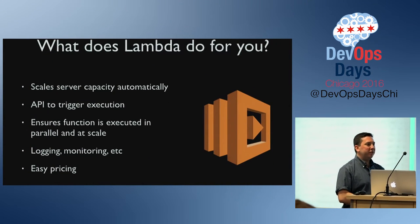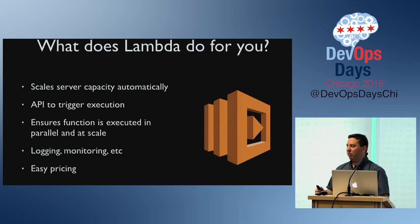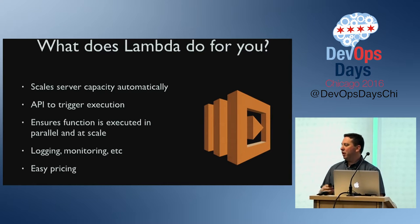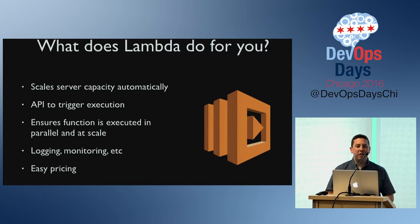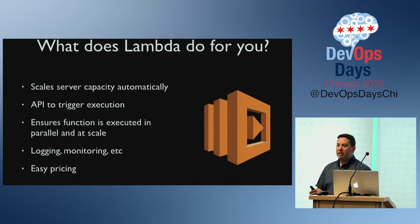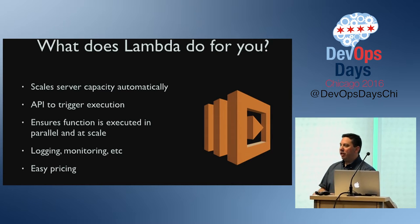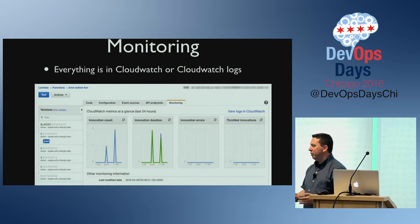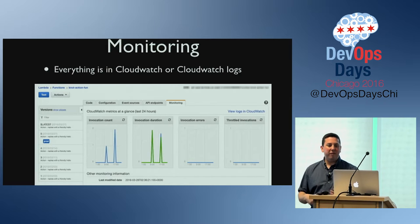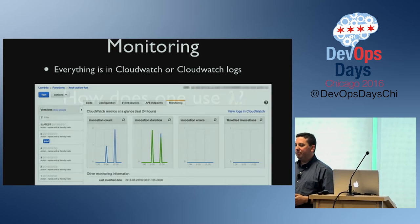So what does Lambda do for you? Lambda is sort of the canonical serverless environment. They manage server capacity, make sure functions are executed, and handle some logging and monitoring. Their monitoring is pretty basic — it just tells you how often things are running and how slow or fast they're moving.